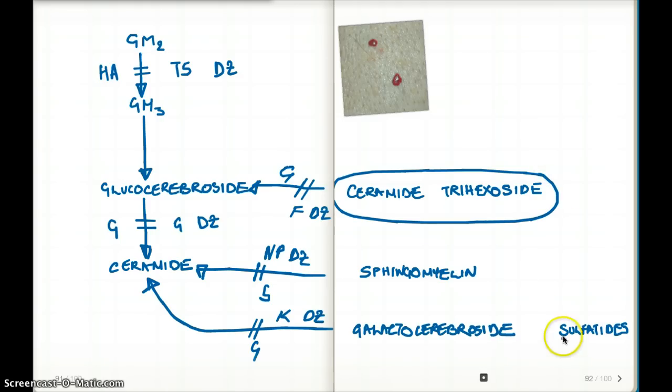There's one pathway I forgot to mention: sulfatides can become galactocerebroside. When this enzyme is inhibited, we have metachromatic leukodystrophy. The enzyme is arylsulfatase A.